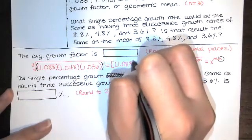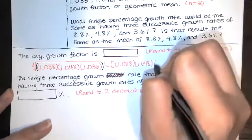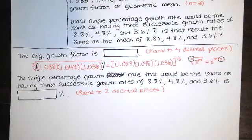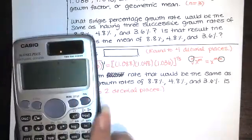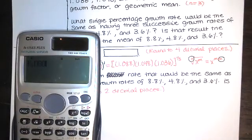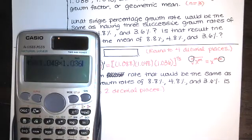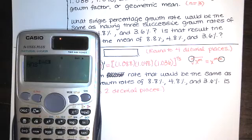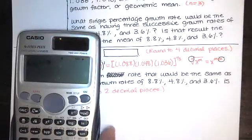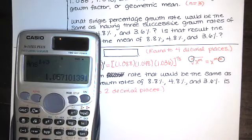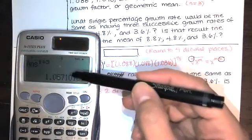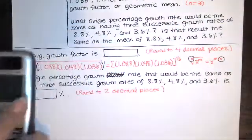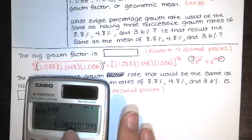So we can calculate this using this, just multiply those three numbers together, and then raise the whole thing to the one-third power, and then we want to round to four decimal places. So I'll just multiply these on my calculator, and then raise it to the one-third power. So it's the answer raised to the one over three, and then I want to round to four decimal places. So we look at the fifth decimal place, which happens to be a zero, so we're just going to keep that one the same. So the answer here is 1.0571.